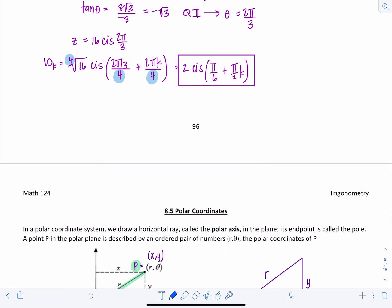So first one is w sub 0. Always start with 0. So you're going to have 2 cis pi over 6. And then I'm plugging in 0 for k so that one's done.